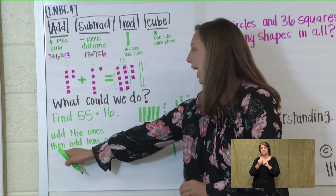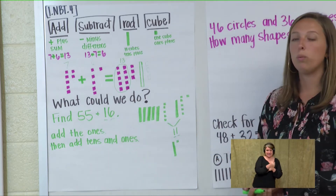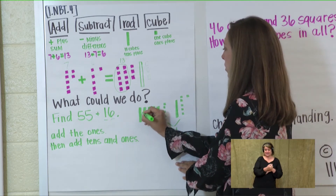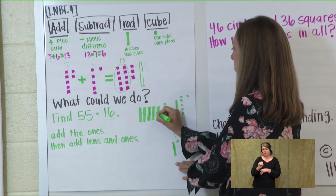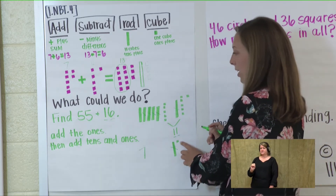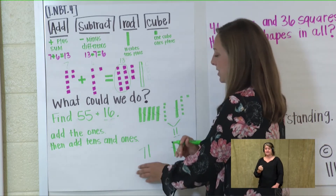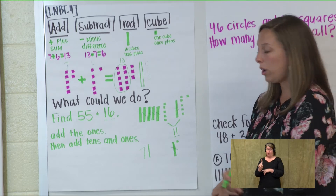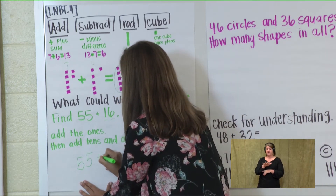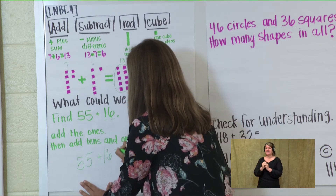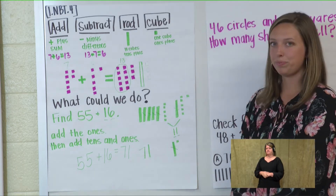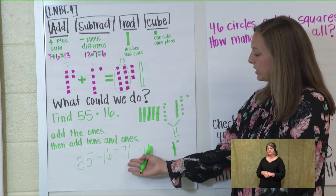Then it said add the tens and ones. So when we're adding our tens, let's count by 10: 10, 20, 30, 40, 50, 60, 70. And our ones — so I have 71. So 55 plus 16 equals 71. The sum is 71. We have 7 rods and 1 cube.